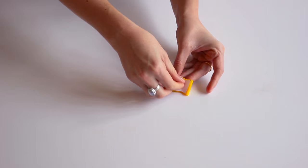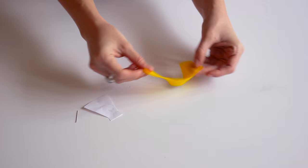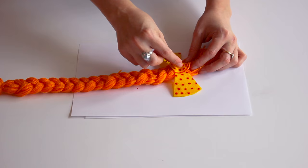Cut out your template. Use a marker to make it dotty. Glue it to the plait.